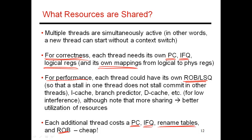Usually the reorder buffer is separated for every single thread, because just because one thread is stalled waiting for a memory operation, you don't want to stall commit for other threads. So every thread is given its own reorder buffer, so that one long-latency instruction does not stall the entire pipeline — it only stalls that one thread. But everything else in the processor can be shared: the caches, the instruction cache and data cache, the branch predictor, and the functional units in the ALUs — all of those are shared freely.